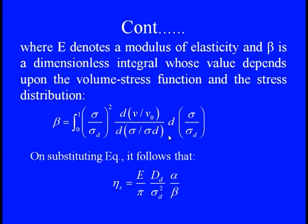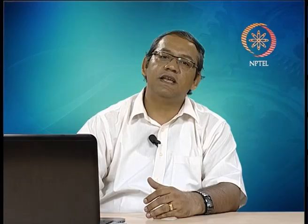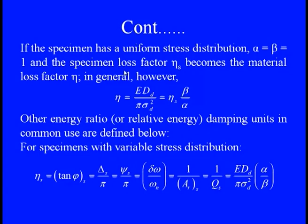When we are substituting these things into the variable stress distribution, the loss factor η_s with variable stress distribution is nothing but equals to E·D_d·α divided by π·σ_d²·β. Here E is the Young's modulus, D_d is the designed value considering the damping dissipation of energy, and α and β are the two specific parameters. σ_d² is the maximum peak stresses related to the D_d part. So if the specimen is having a uniform stress distribution, certainly α and β will be the same, and the loss factor becomes η = E·D_d / (π·σ_d²), or it is nothing but equals to η_s (non-uniform stress distribution loss factor) times β/α.